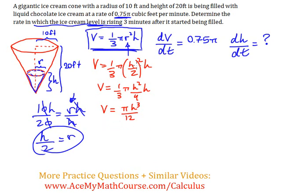Now, one interesting thing about this particular problem is that we don't know the height in which the ice cream is currently at when we want to determine the dh dt. How can we determine that? We only know that ice cream has been poured inside the cone for 3 minutes. So, well, we can very easily just multiply the 3 minutes by the 0.75 pi cubic feet to determine the volume. The volume at the time we're interested in to find the rate. So, the volume is just 3 times 0.75 pi. So, that's going to work out to be 2.25 pi, which is 9 pi over 4.